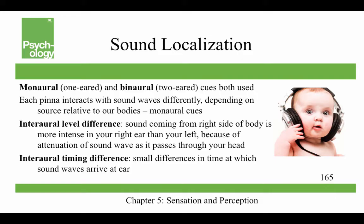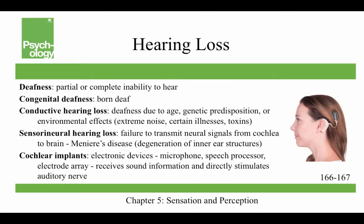Sound localization — how do we know where sounds are coming from? We use monaural (one-eared) and binaural (two-eared) cues. An example of a monaural cue is that each pinna interacts with sound waves differently depending on the source relative to our bodies. Interaural level difference means that a sound coming from the right is more intense in your right ear than your left because your head blocks the sound wave — it's the attenuation of the sound wave as it passes through your head. Interaural timing differences are the small differences in time it takes for sound waves to reach each ear, which also help localize sound.